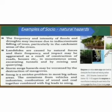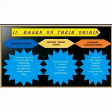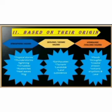So far we have seen natural hazards, human-made hazards, and socio-natural hazards. The second type of hazard is based on their origin. The first one is atmospheric hazard, which includes tropical storms, thunderstorms, lightning, tornadoes, avalanches, heat waves, fog, and forest fire.